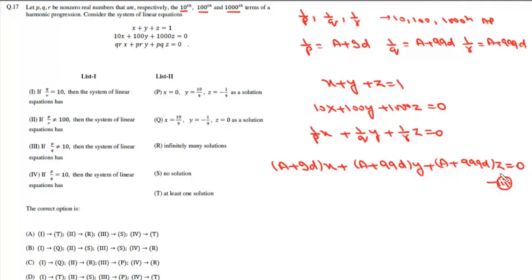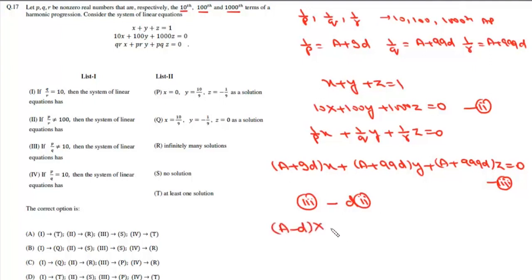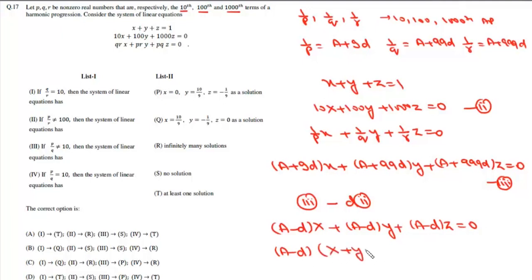We take equation three and subtract d times equation two from it. This gives (A - d)X + (A - d)Y + (A - d)Z = 0, which simplifies to (A - d)(X + Y + Z) = 0.